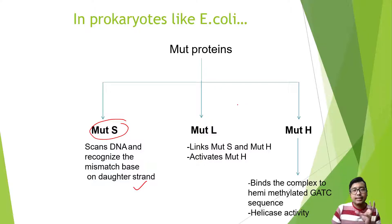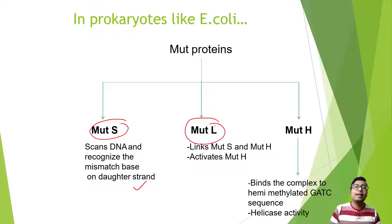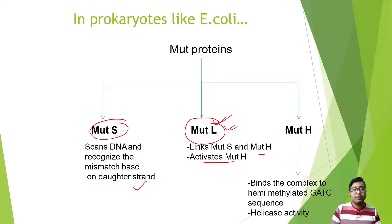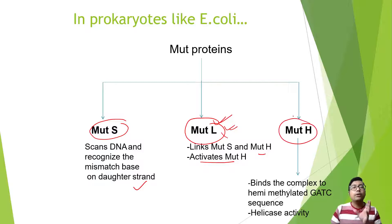MutS signals or brings MutL. MutL forms a link between MutS and another Mut protein — MutH — which is activated by MutL. So MutS will get connected to MutH by MutL. Who activates MutH? MutL activates MutH. What does MutH do? MutH actually binds to the hemimethylated GATC sequence.